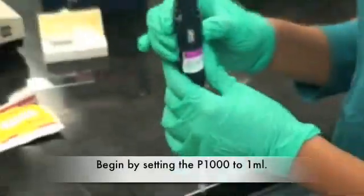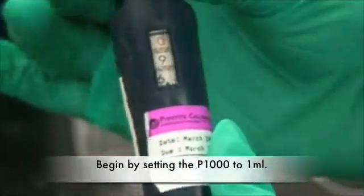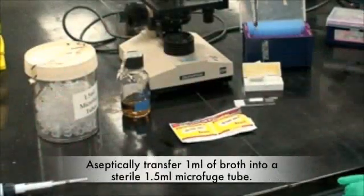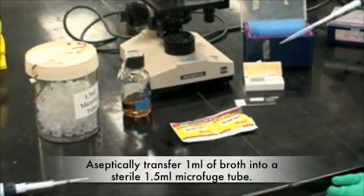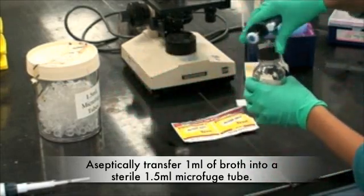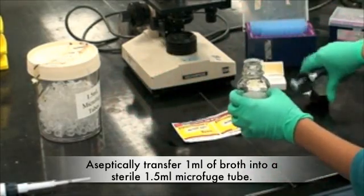Begin by setting the P1000 to 1 milliliter. Aseptically transfer 1 milliliter of broth into a sterile 1.5 milliliter microfuge tube.